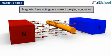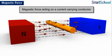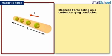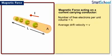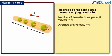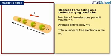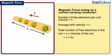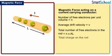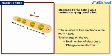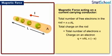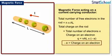Now let us discuss the magnetic force acting on a current-carrying conductor. Consider a conductor of length L with uniform cross-section area A and the number of free electrons per unit volume as N. These electrons are moving with an average drift velocity V. The total number of free electrons in the rod is equal to N times the volume of the rod, which equals NAL. The total charge on the rod equals the total number of electrons multiplied by the charge on an electron, that is, Q = NAL × (−e), where −e is the charge on an electron.